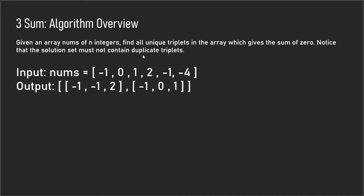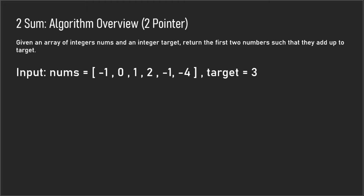The solution set cannot contain duplicate triplets. The brute force algorithm is to check every single unique triplet combination and see if it adds up to zero, but that's very inefficient. So what we want to do instead is use a two-pointer algorithm.